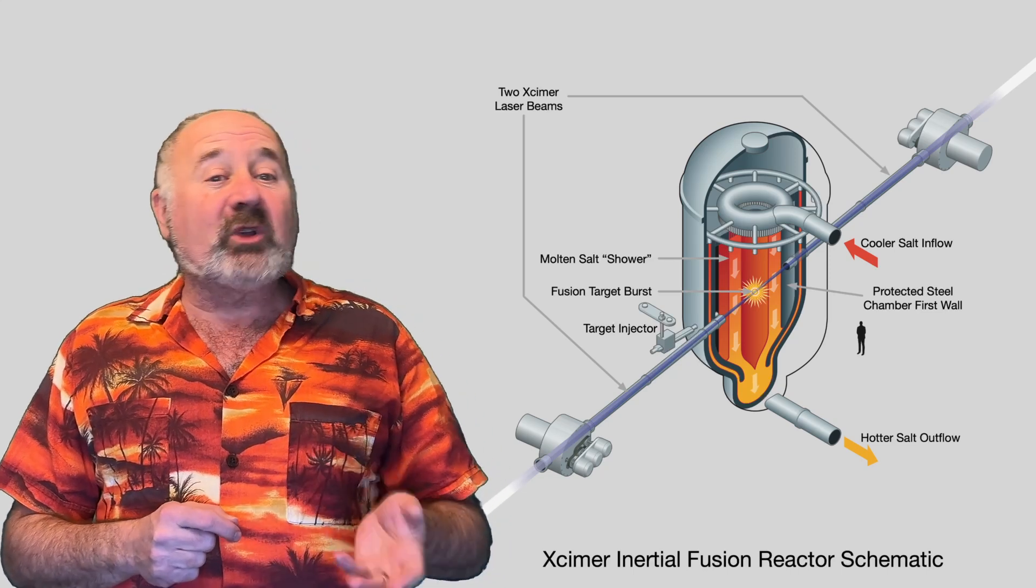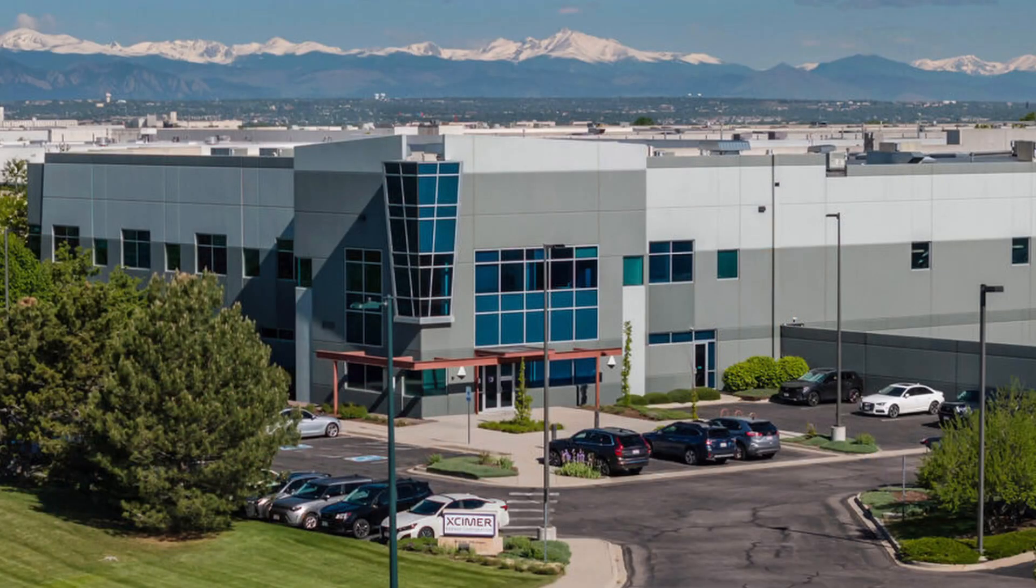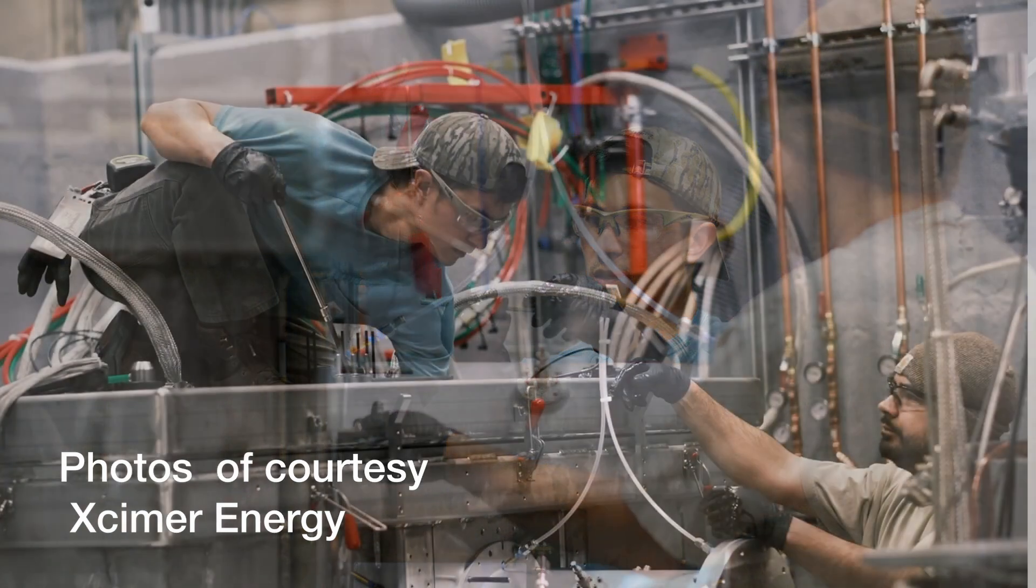Xcimer is using that money to construct a facility in Denver called Phoenix, which is probably better than building a facility in Phoenix called Denver. There they'll build prototypes of the lasers and optics that will be needed before they can build a full-fledged reactor.